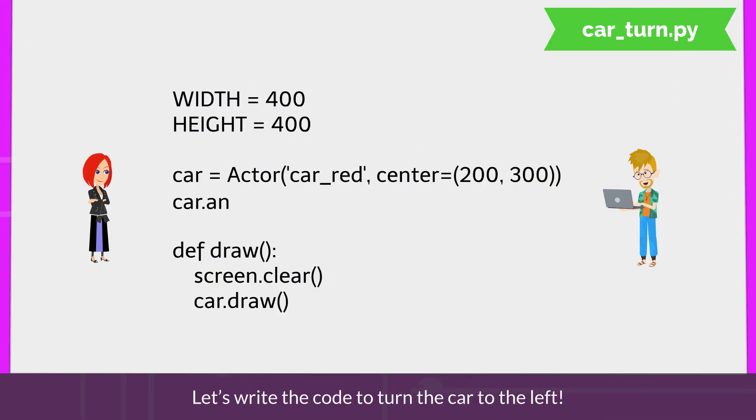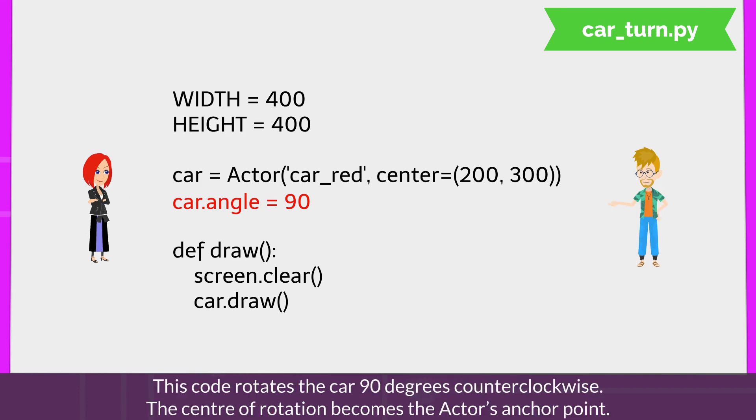Let's write the code to turn the car to the left. What does this code mean? This code rotates the car 90 degrees counterclockwise. The center of rotation becomes the actor's anchor point.